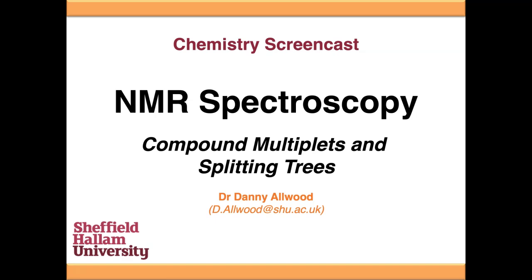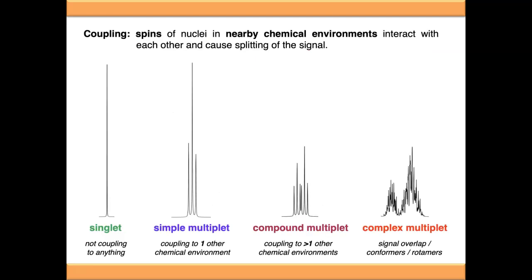This video is going to introduce compound multiplets and explain how we can use splitting trees to interpret the multiplicity of our signals. In the previous video we talked about what coupling was, what causes it, and how we can categorize our signals: singlets where we don't have any coupling, simple multiplets where we're coupling to one other chemical environment, compound multiplets where we're coupling to more than one other chemical environment, or complex multiplets where there's something else going on such as seeing the Lorentzian lineshape.